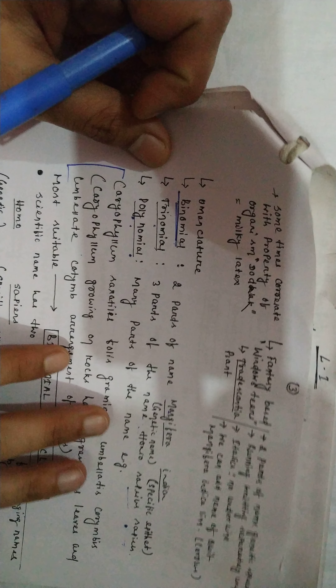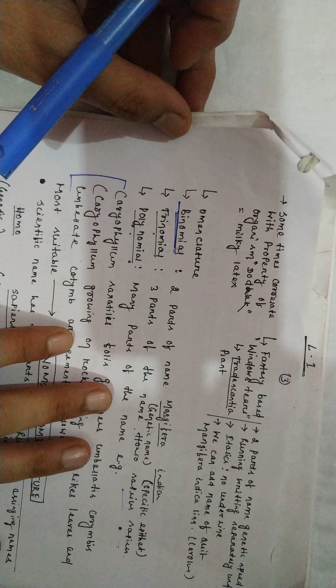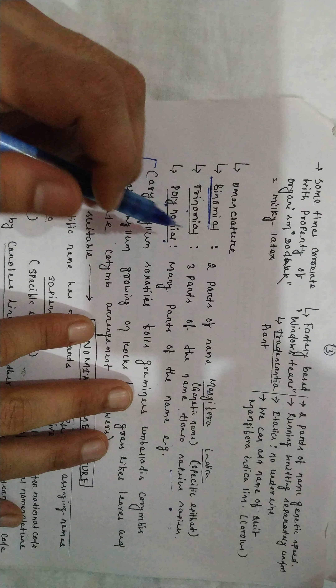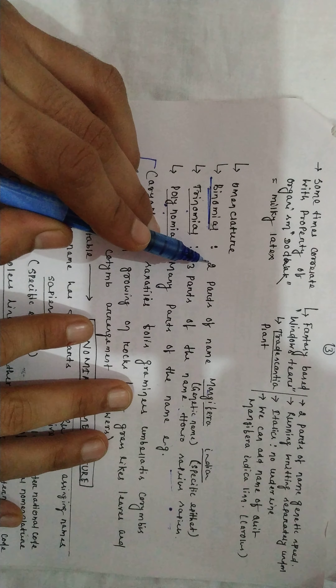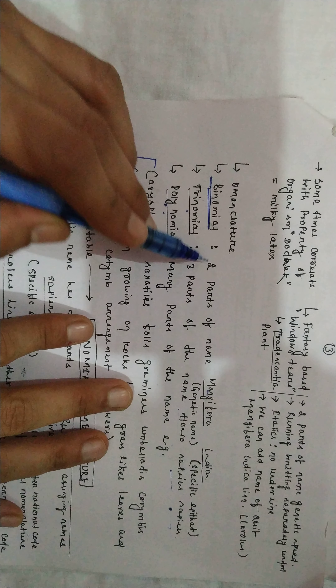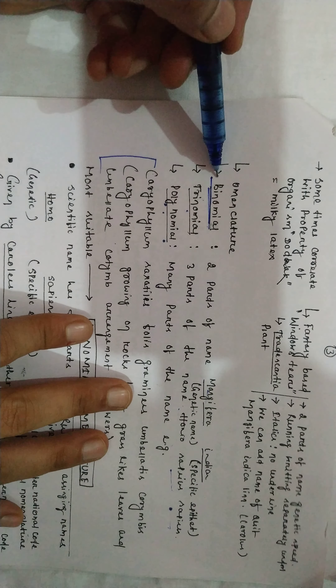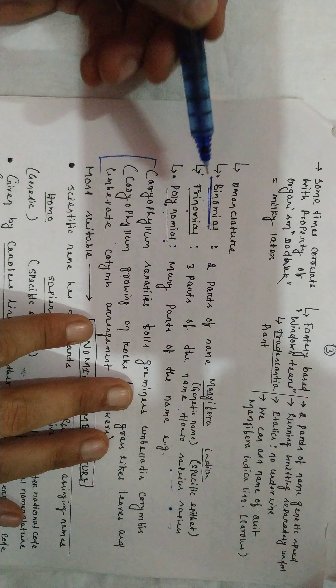Naming of an organism is known as nomenclature. Nomenclature can be binomial nomenclature, trinomial nomenclature, or polynomial nomenclature. Now, binomial nomenclature deals with two names.